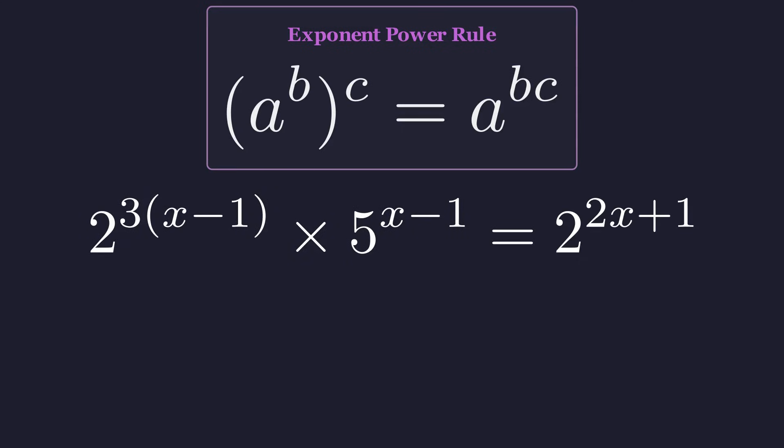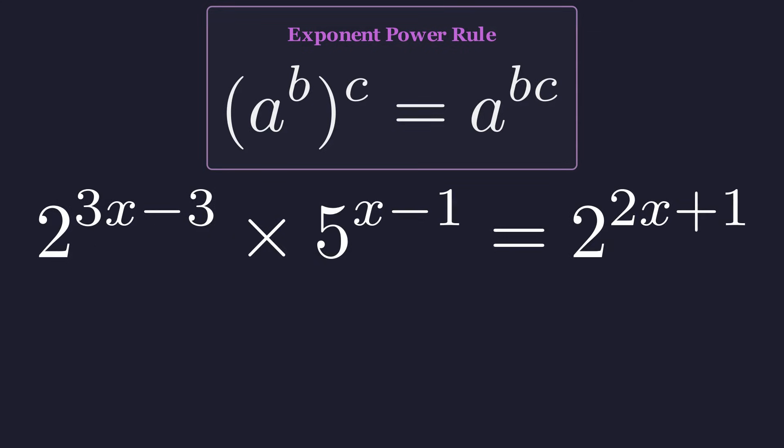The exponent on our base of 2 becomes 3 times the quantity x minus 1. Distributing the 3, we get 2 to the power of 3x minus 3.